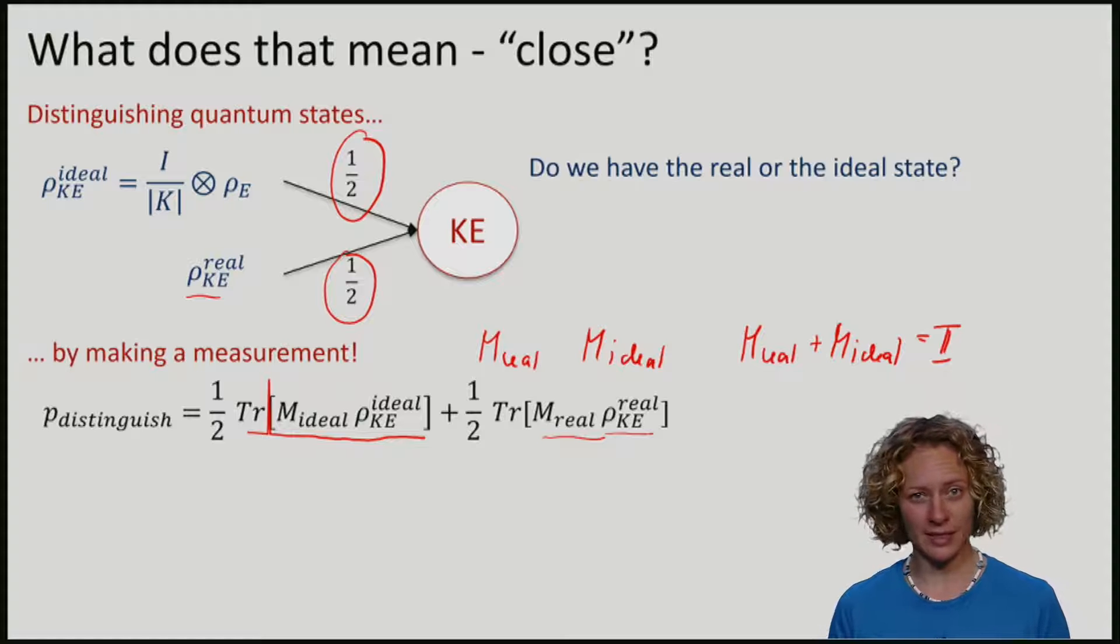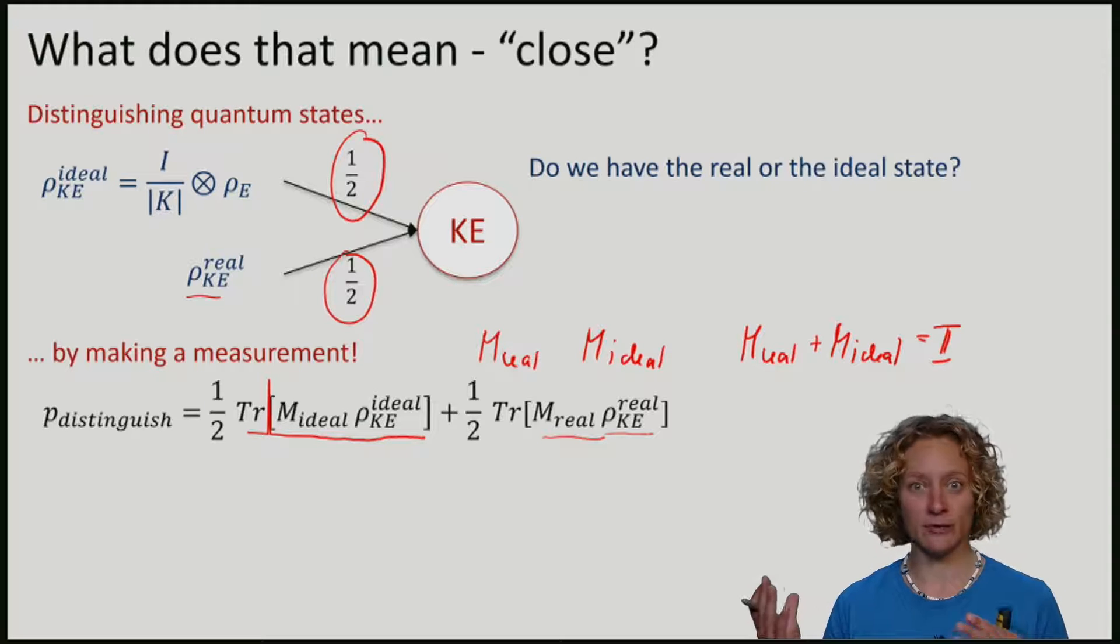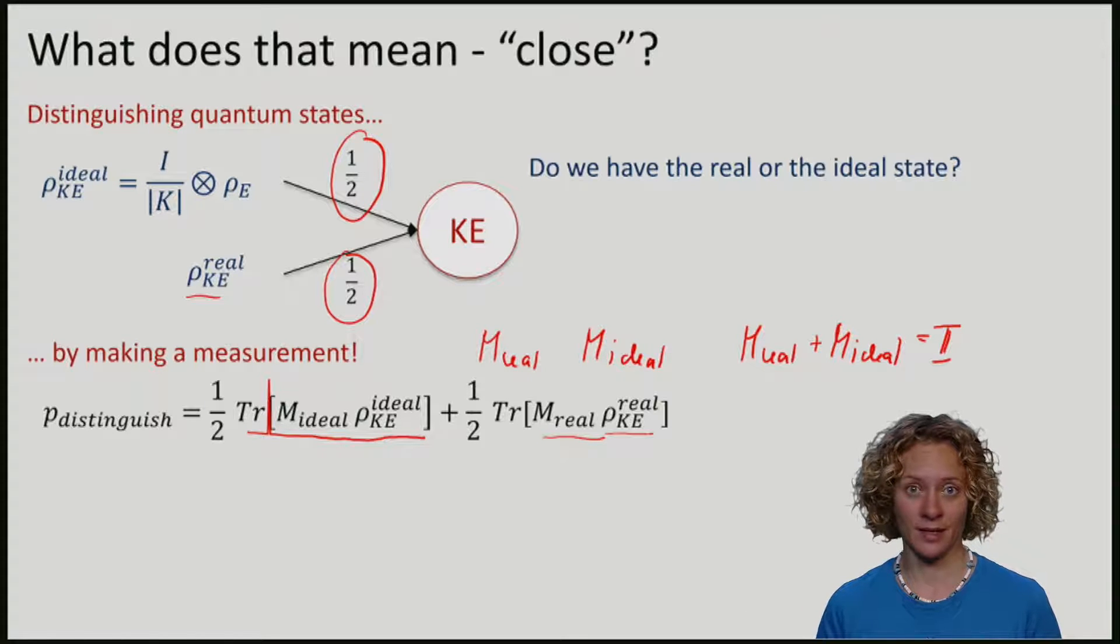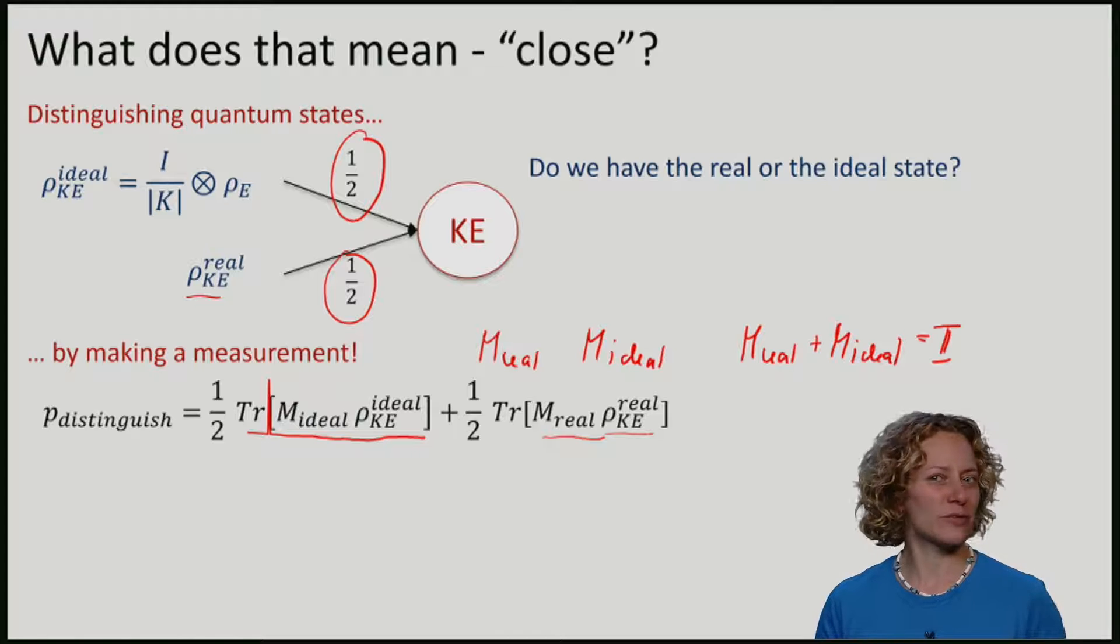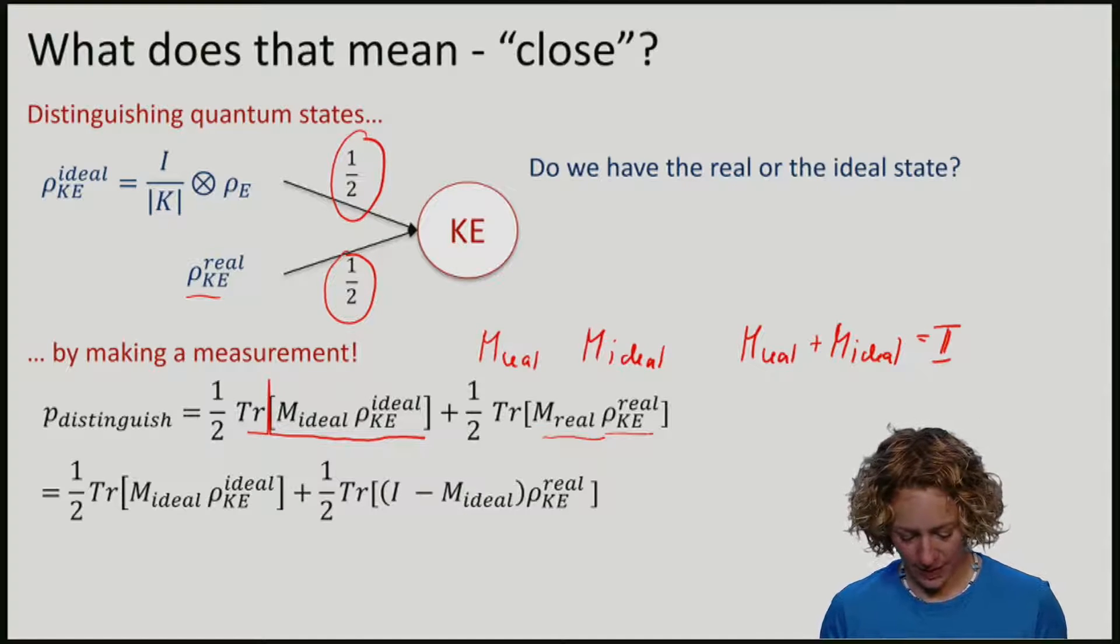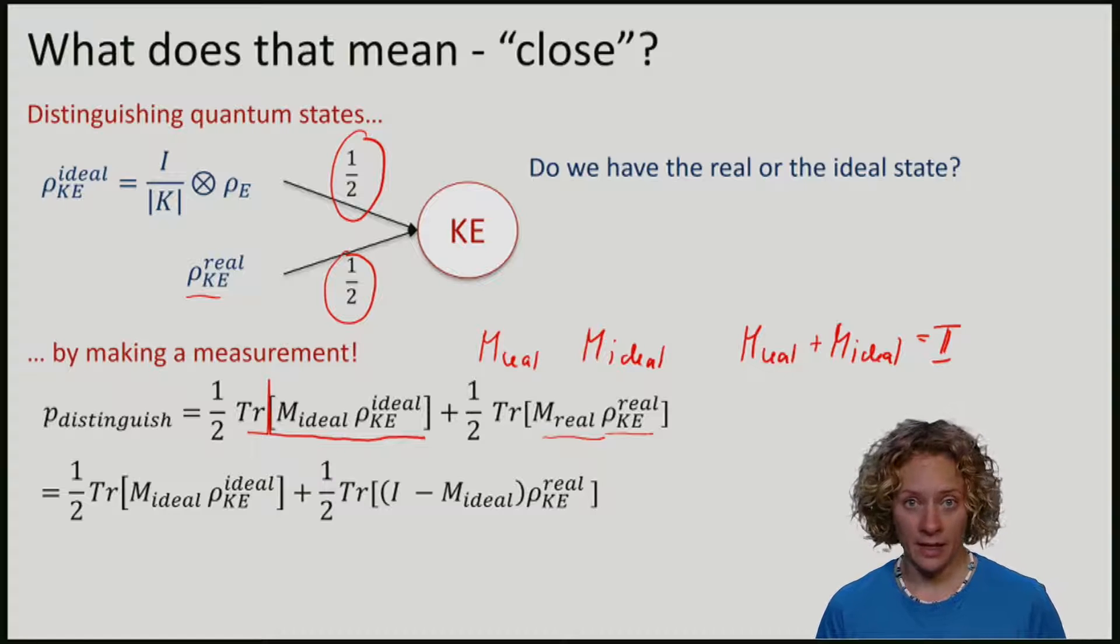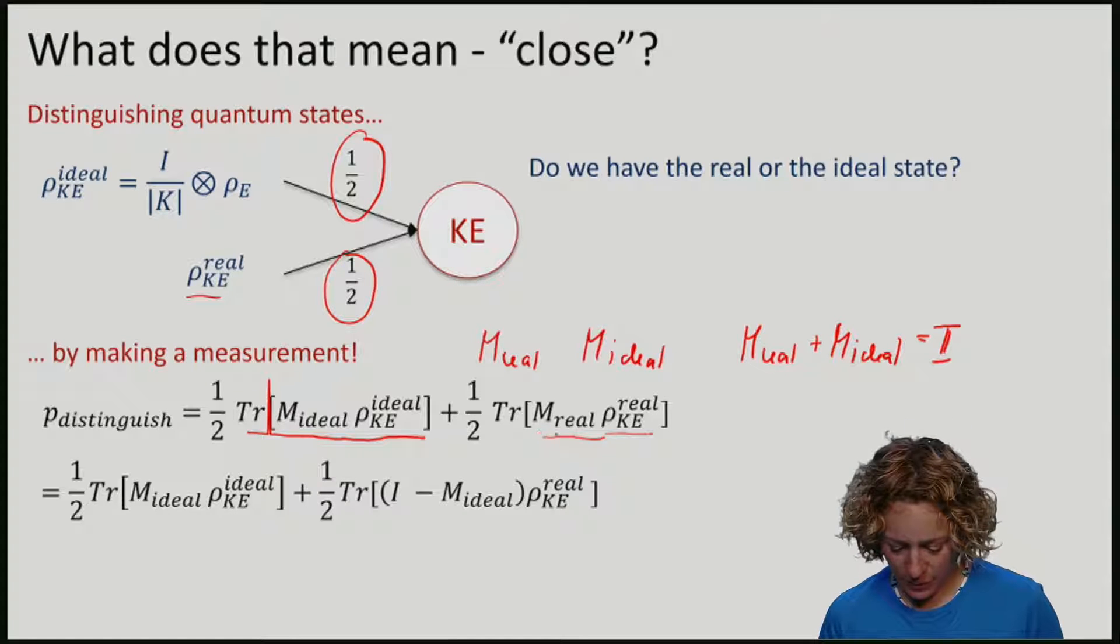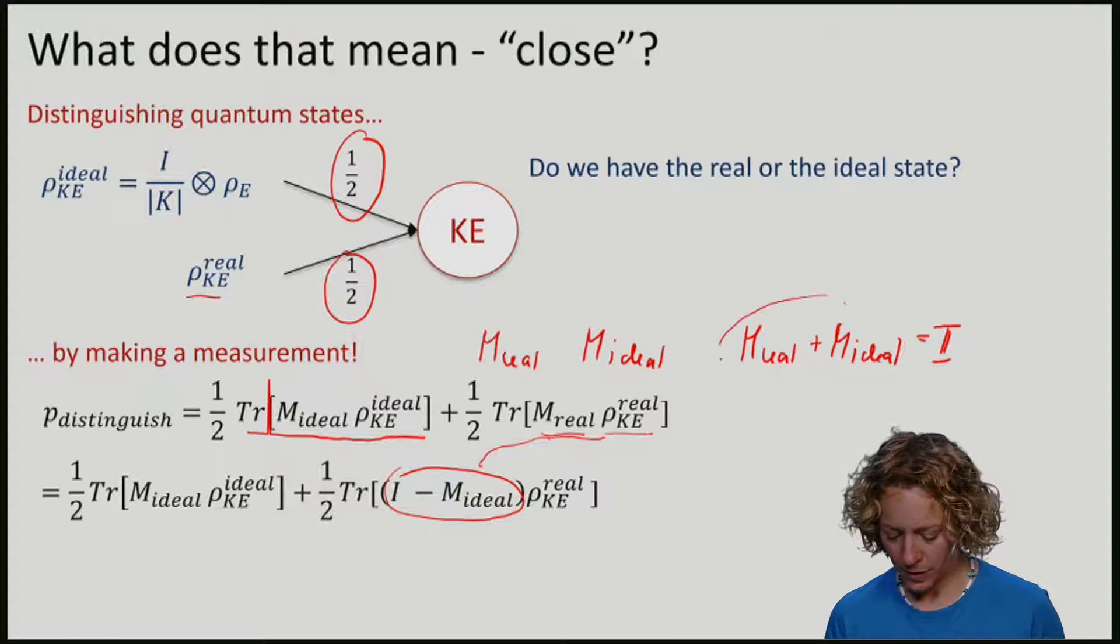So, this is the probability of distinguishing the real from the ideal. Let me just rephrase this by saying that M real and M ideal add up to the identity. So, what I've done here is I've taken M real and I've replaced it by the identity minus M ideal coming from here.